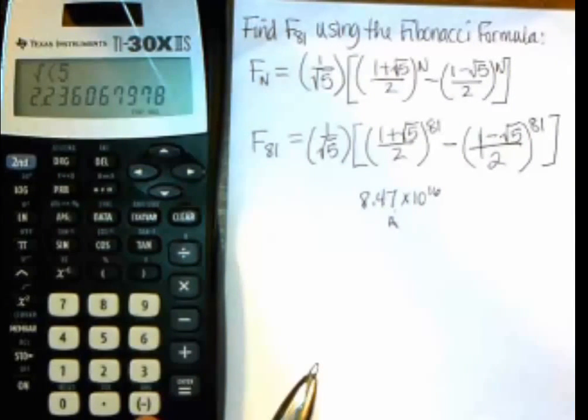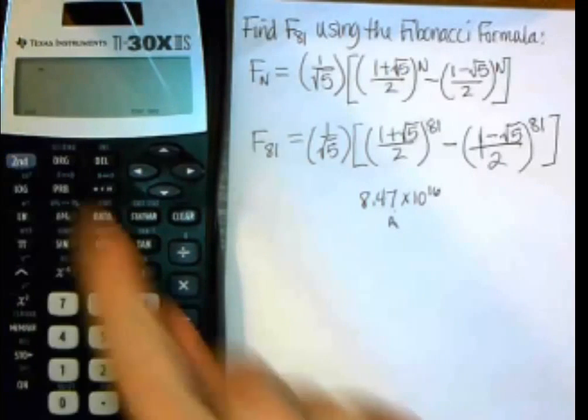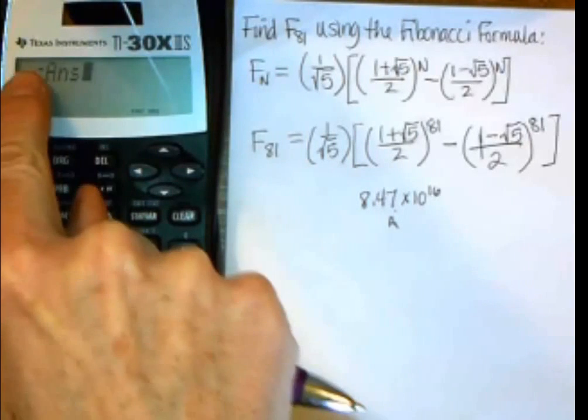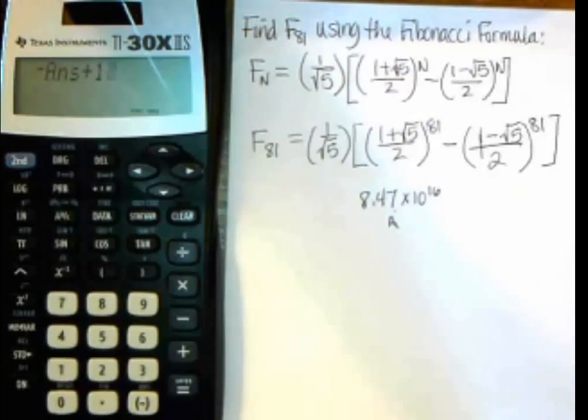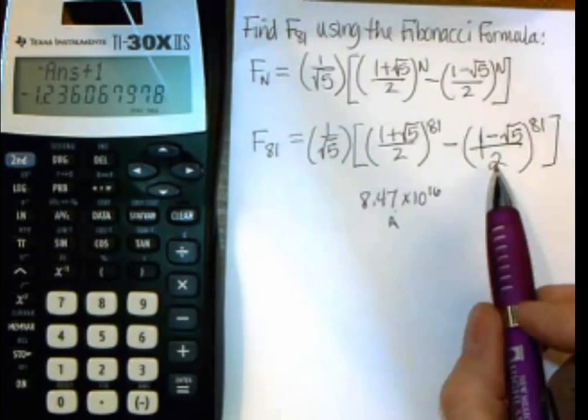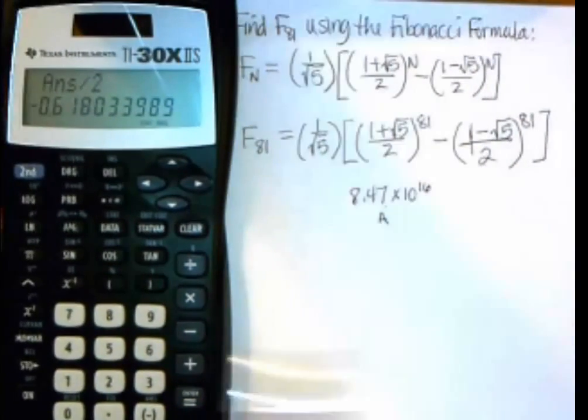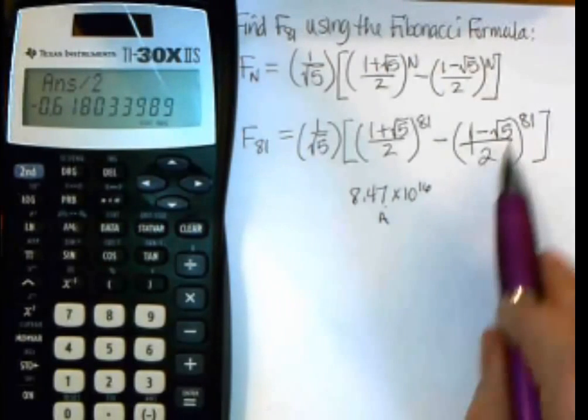And then I want to make it negative. So I'll just use this change the sign button right here. So I change the sign, and I have to tell it on the answer. So I do second, and that same button it happens to be, but you can see right above it, it says ANS. So answer, it's taking the previous answer, changing it to a negative, and then I want to add one. So then I can do plus one. There are other ways to do this. This is just one way. And so I'll add one, and then now I need to divide by two. So I'll do divide by two, and I get negative 0.618, and it goes on and on. That was for this whole part here in parentheses.